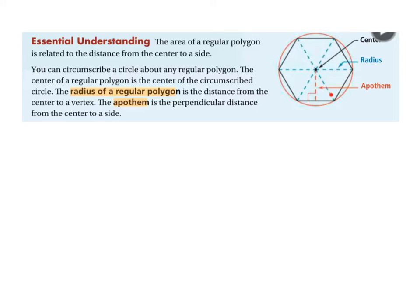Going out to the vertex is different from going perpendicular to the side. What they've shown you here is that you've got this circumscribed circle — basically a circle going around the very outside of that polygon — and the radius of the circle is the same as the radius of the polygon. Circumscribed means that the circle is on the outside.